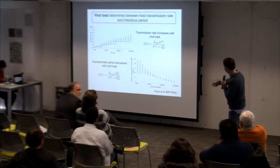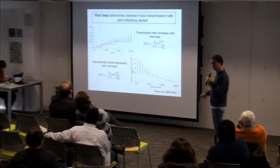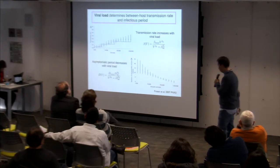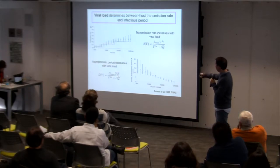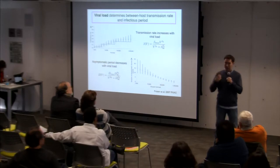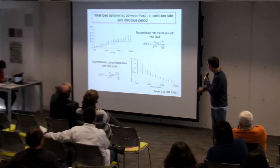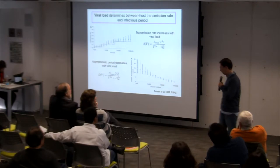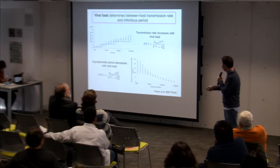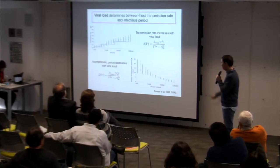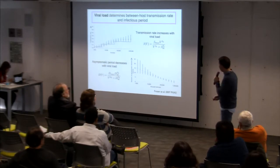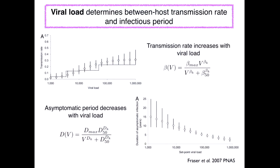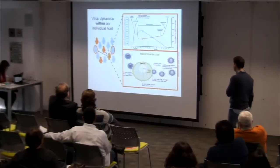We also have an explicit function determining the duration of the asymptomatic period as a function of viral load. As expected, the transmission rate increases with viral load, but the asymptomatic period decreases with viral load. To determine the viral load, we use the virus dynamics inside an individual host and go back to the simple within-host model. We consider two different situations: when treatment starts but doesn't work and we get drug resistant strains, and when treatment is successful — in which case the viral load goes down to essentially zero.